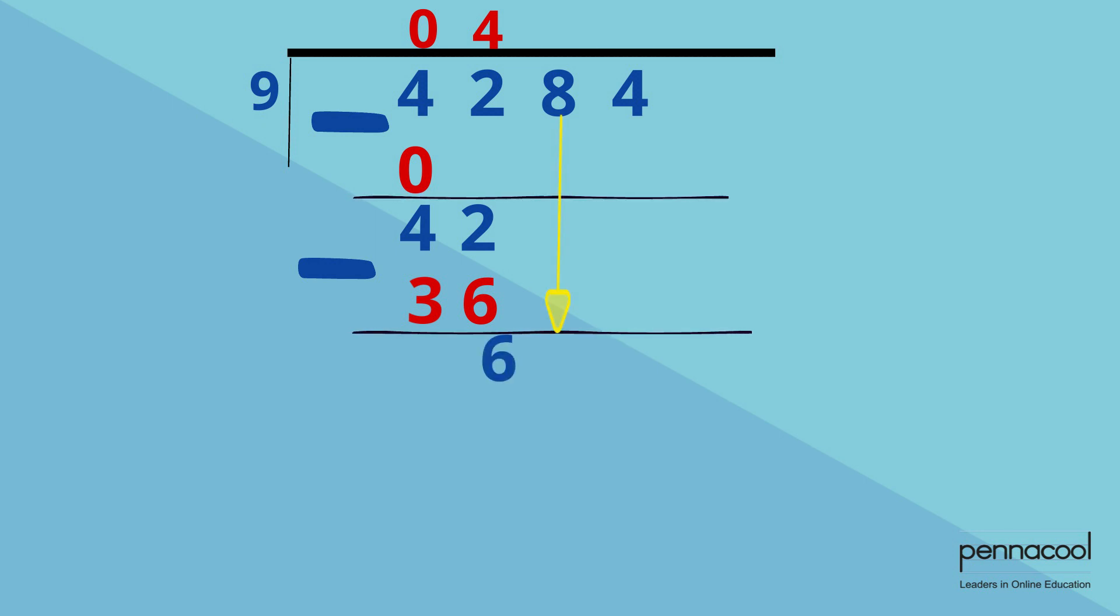The following number in line to be divided, which is 8, is brought down. So we now have 68 divided by 9.